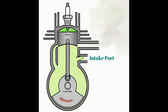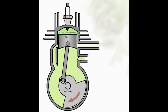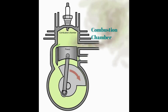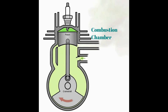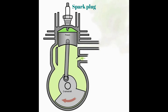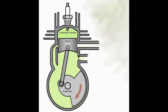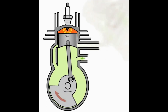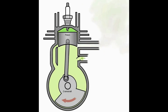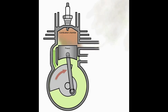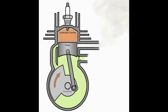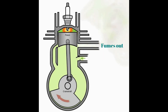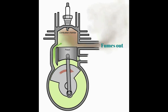In the first-stroke cycle, fresh air-fuel mixture is drawn in via the intake port and added to the existing mixture in the crankcase. At the same time, the mixture is compressed into the combustion chamber and finally ignited by the spark plug. In the second-stroke cycle, the hot air expands and presses the piston downward, reducing the volume of the crankcase, forcing the mixture into the combustion chamber while fresh air-fuel mixture forces the exhaust fumes out.